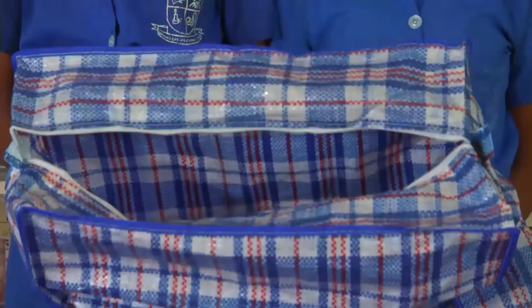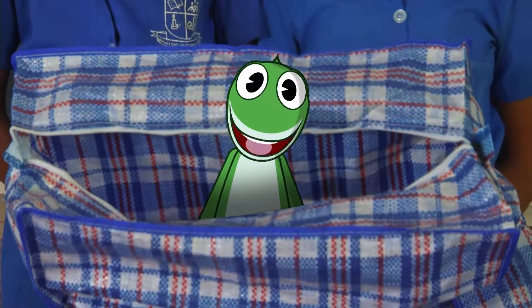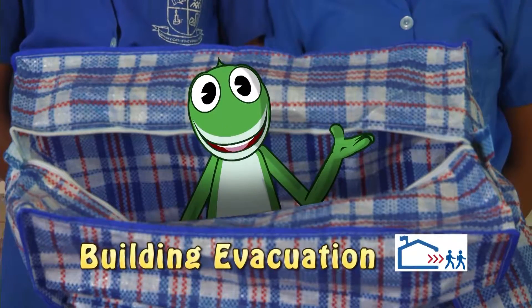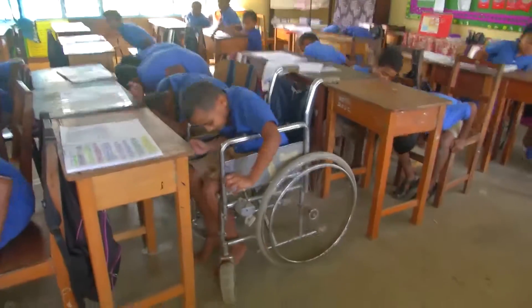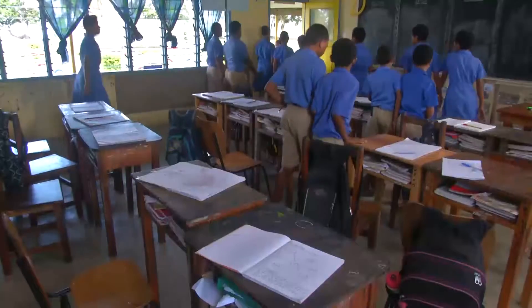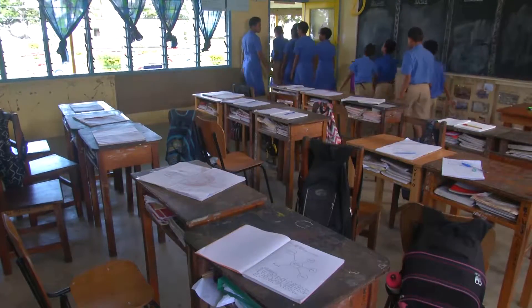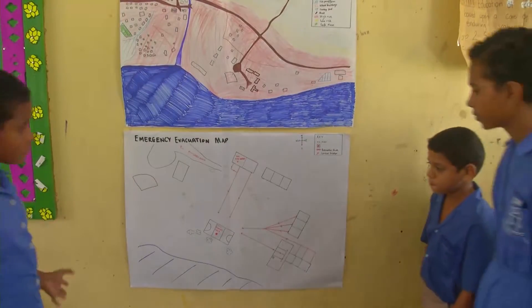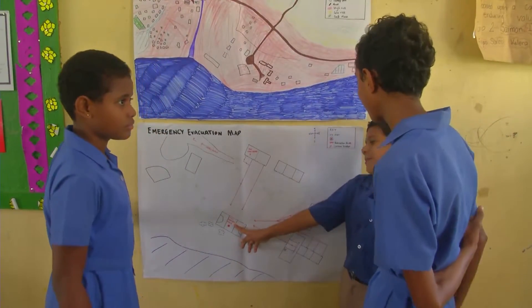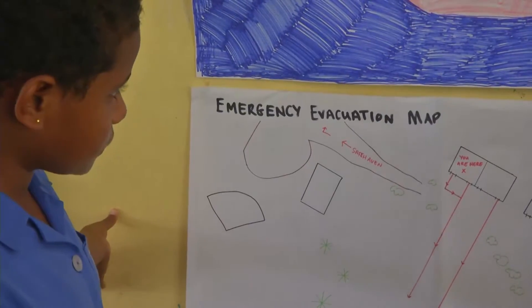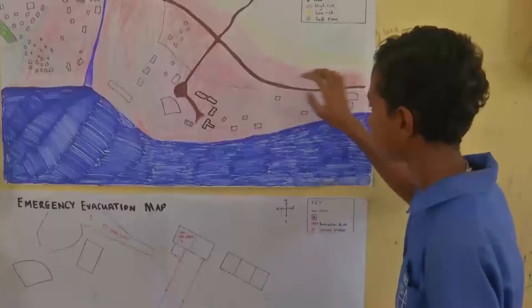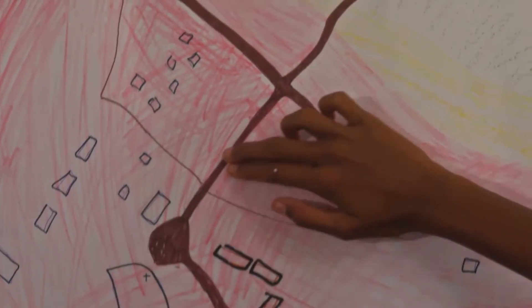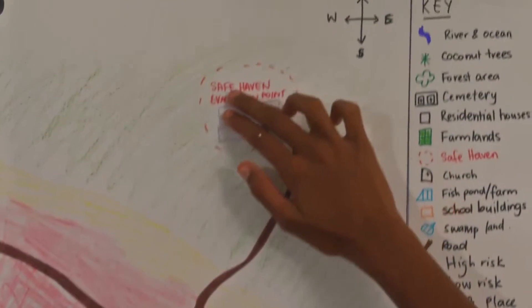Now we're ready — where do we go? The first basic skill we need to know is how to safely evacuate a building. We will use this in case of fire, and if we're indoors and there's an earthquake, we'll do this after the shaking stops. All schools should have an emergency evacuation route on the door or wall of each classroom. You will be guided by your teacher or prefect in the case of an emergency, but everyone should be aware of the designated safe exit routes and safe assembly area.